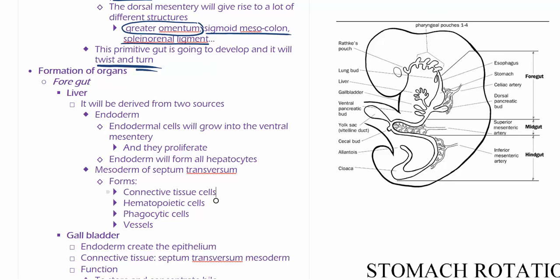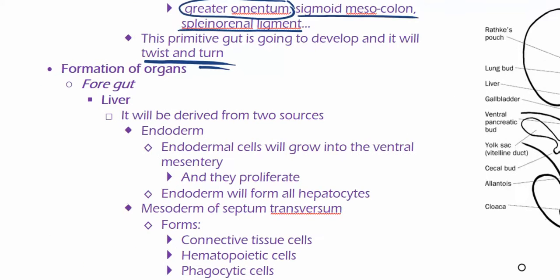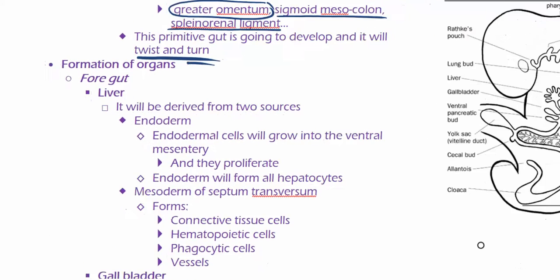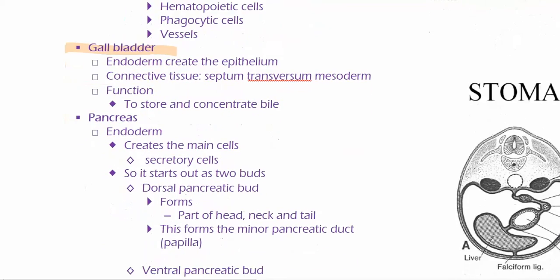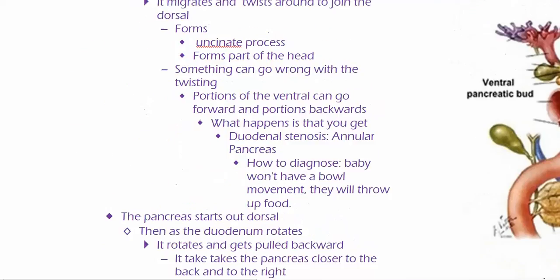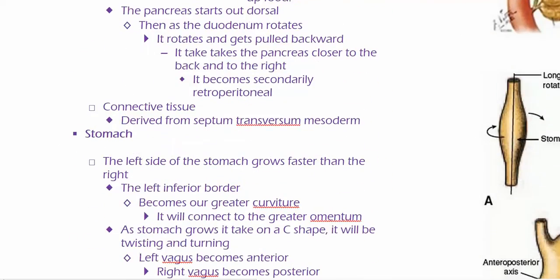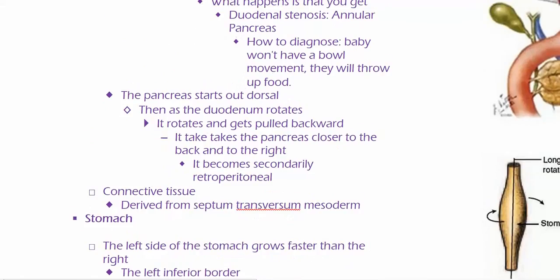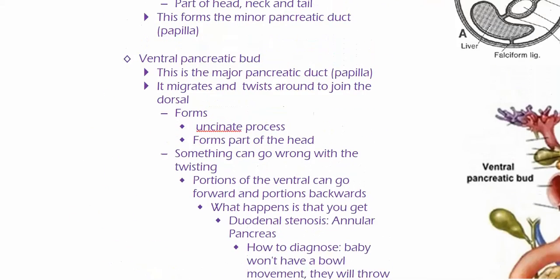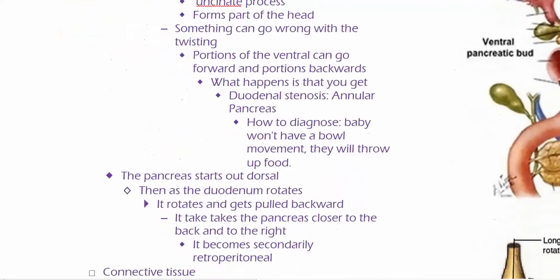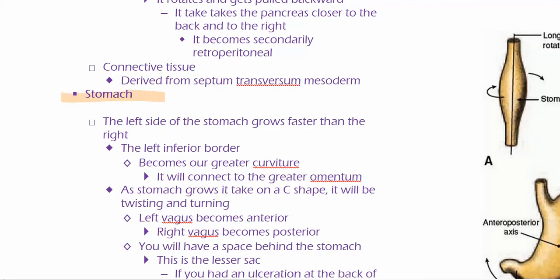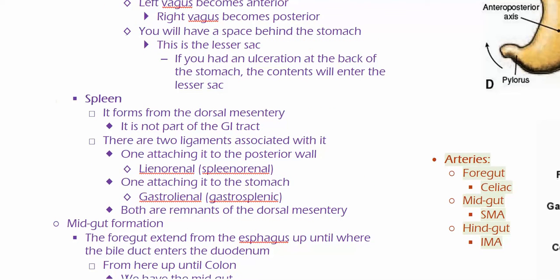Now we get into how we're forming these organs. How are we going to form the liver, the gallbladder, the pancreas, the stomach, and the spleen?